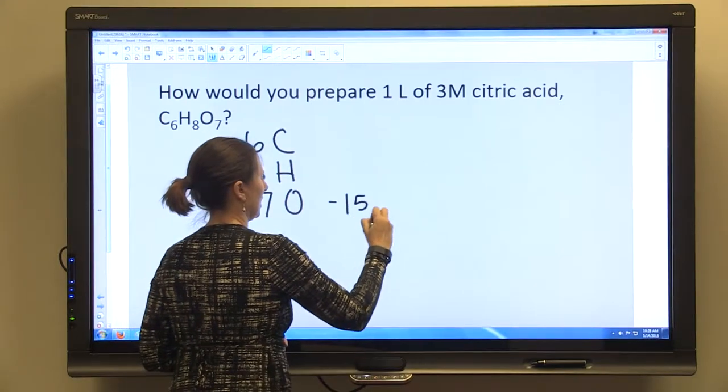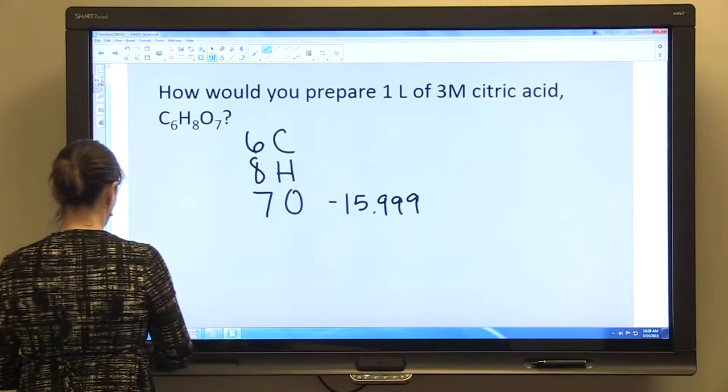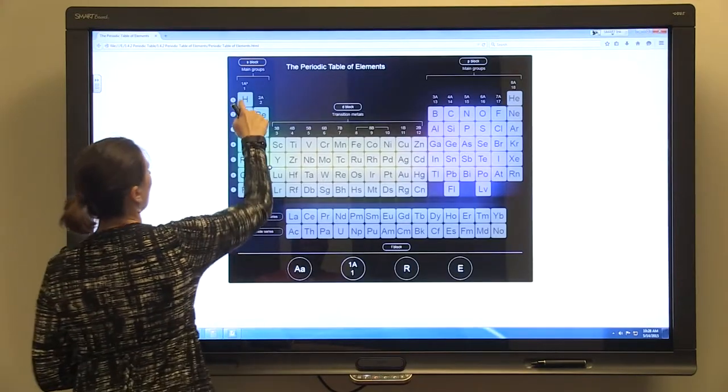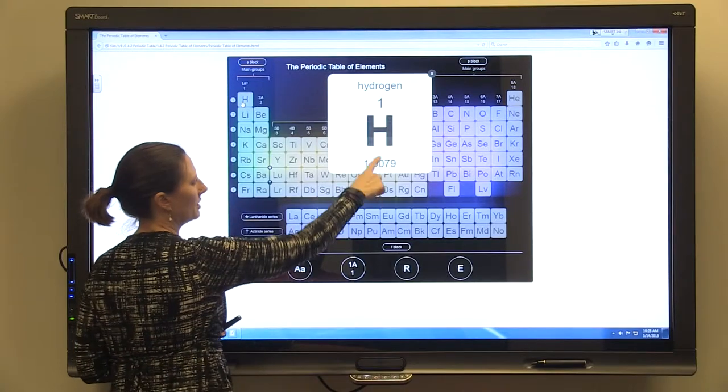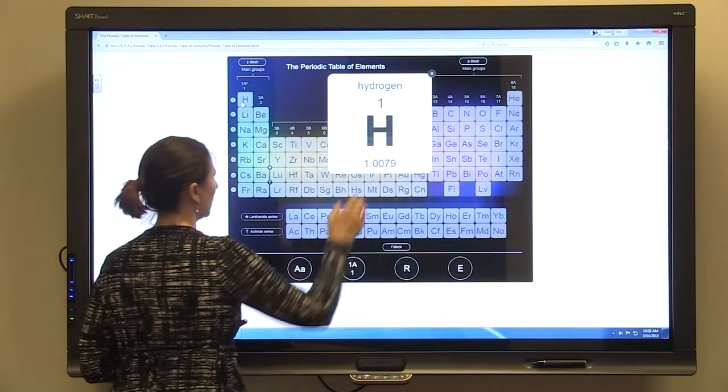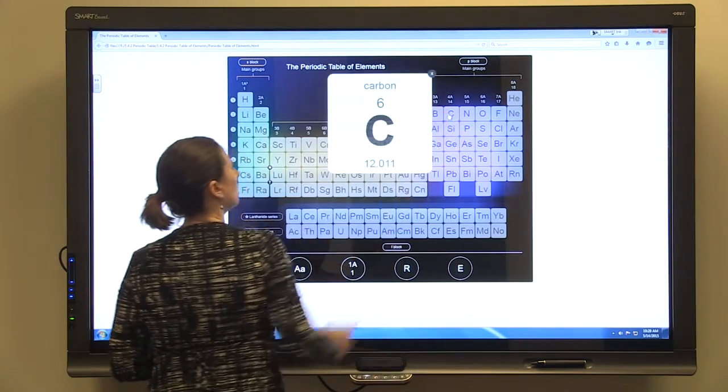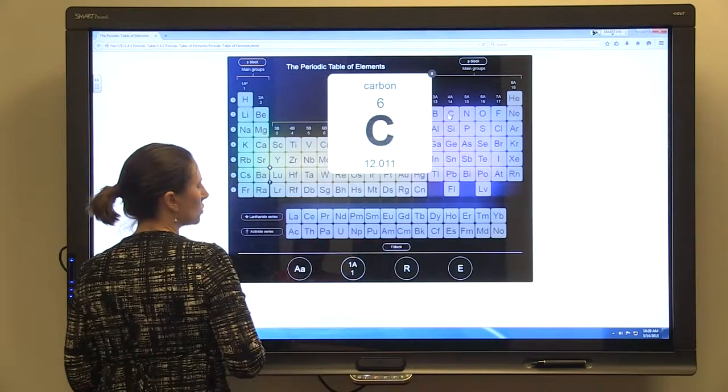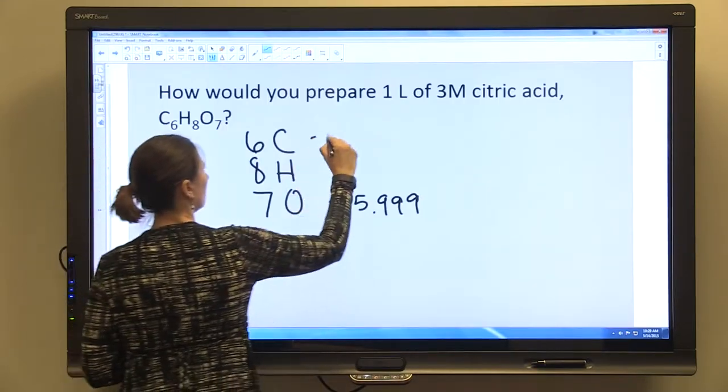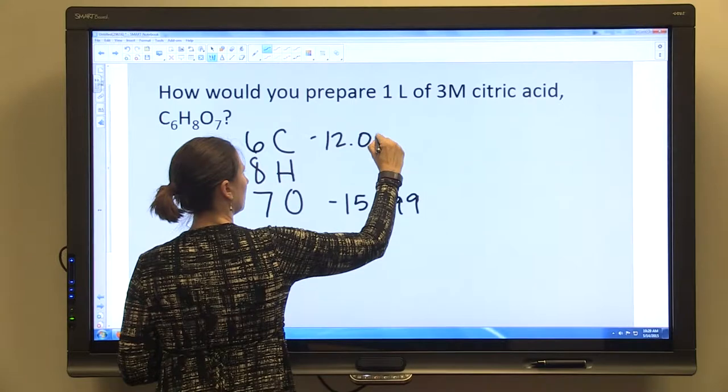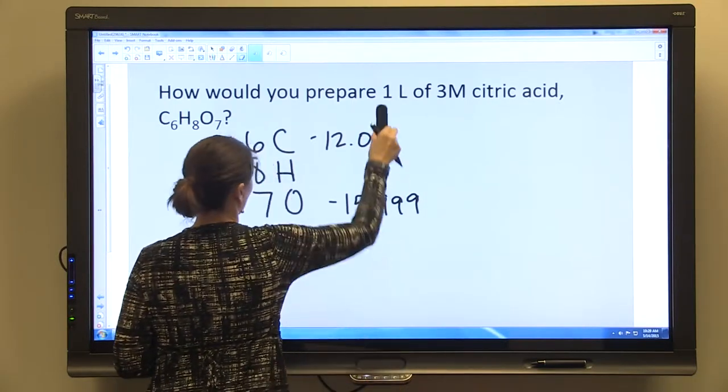Oxygen is 15.999. Let's take a look. Hydrogen is 1.00, and I'm going to round this to 1.008 because I'm just going to use three decimal points. And carbon is 12.011.